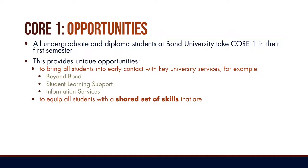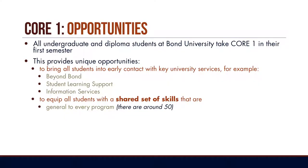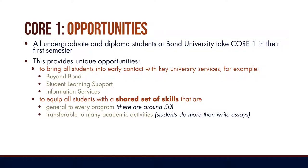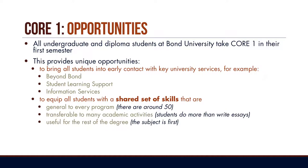We also have the opportunity to equip all students with a shared set of skills, and that set of skills has to meet a few requirements. One of the first difficulties is that this set of skills has to be relevant and applicable to every program — Bond University has around 50. The things we teach them need to be useful for film and television, international relations, biomedical science, actuarial science — and transferable to many academic activities. It's no use just teaching them how to write essays. We also have to make sure the skills are useful for the rest of the degree. There's a reason why Core 1 comes first: to set people up for the rest of their academic career.